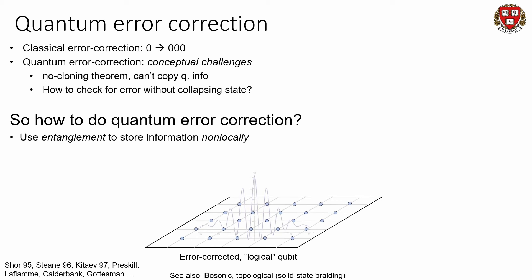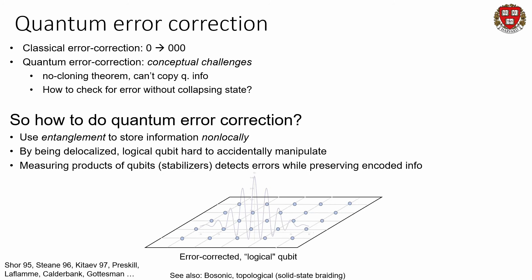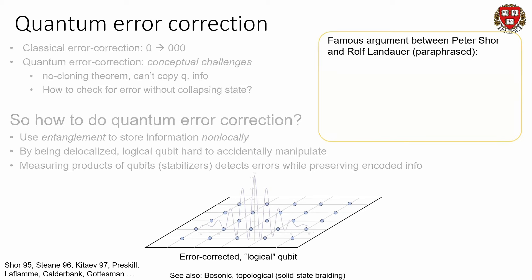You take some logical qubit degree of freedom that you care about and spread it out across many individual physical qubits. You take this logical qubit and hide it — delocalize it over many individual physical qubits through entanglement. Now if the environment were to come in and measure just a single one, it actually learns nothing about the underlying state you stored. Remarkably, you can infer the errors that happened without corrupting the underlying state of the logical qubit — not by measuring individual qubits, but by measuring products of qubits. These products of qubits are called stabilizer checks.